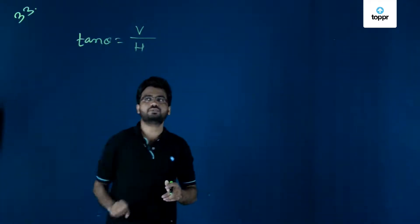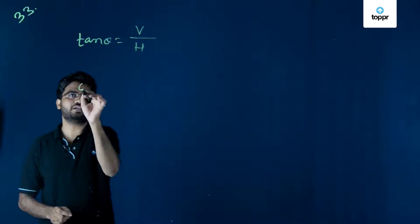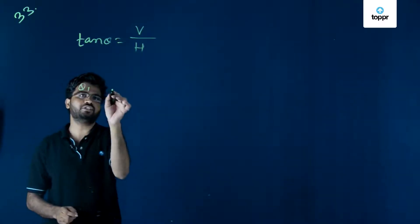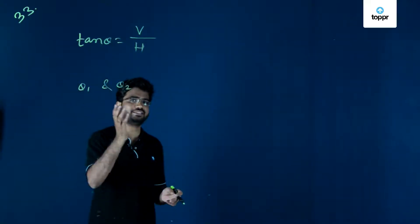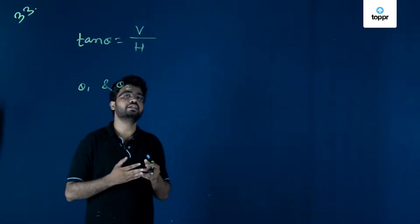From this, if theta 1 is the angle of dip and theta 2 is the apparent angle of dip, this theta 1 and theta 2 are the apparent angle of dip.